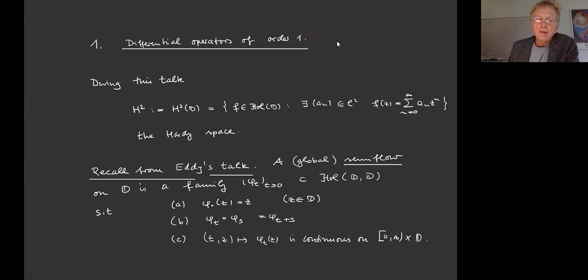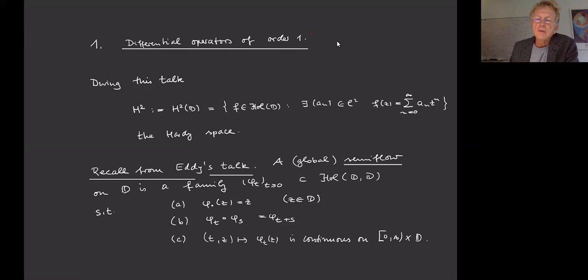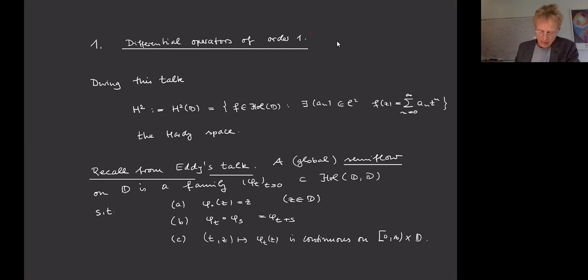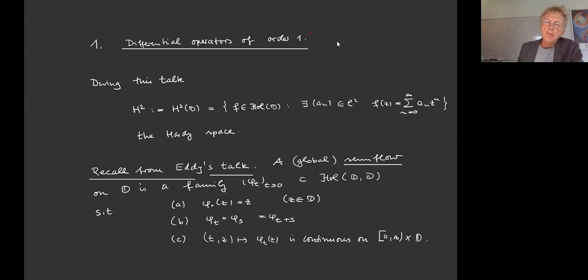I recall from the talk of Edi Bernach the notion of a semi-flow — or rather a global semi-flow. This is a family of holomorphic maps φ(t) going from D into D which leave invariant the unit disk. φ(0) is just the identity, and we have the semigroup property: φ(t) composed with φ(s) equals φ(t+s). The last property is a continuity property: it is a continuous function on R+ cross D.